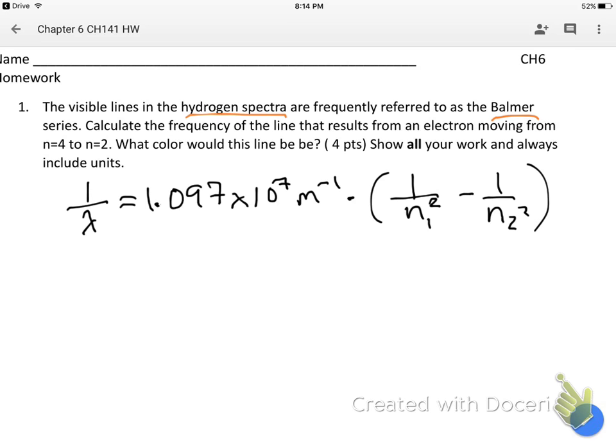So that's the Rydberg constant, and then the equation says it's 1 over N1 squared minus 1 over N2 squared. So the trick here is to properly define N1 and N2, and the thing to remember is that N1 is always the smaller number. If I define them backwards, I end up getting a negative number, and you can't have a negative wavelength, so that doesn't make sense.